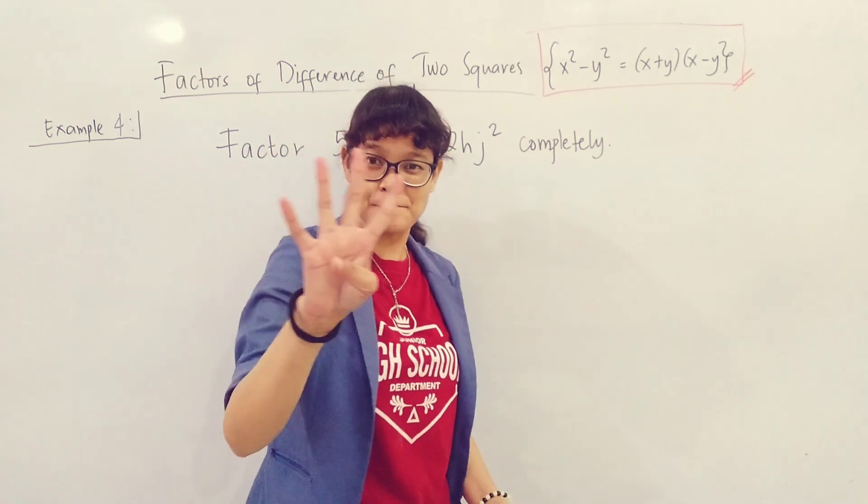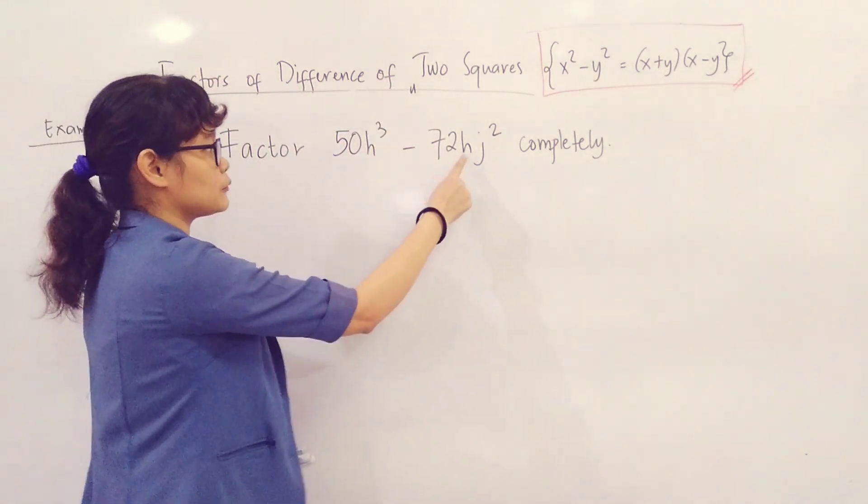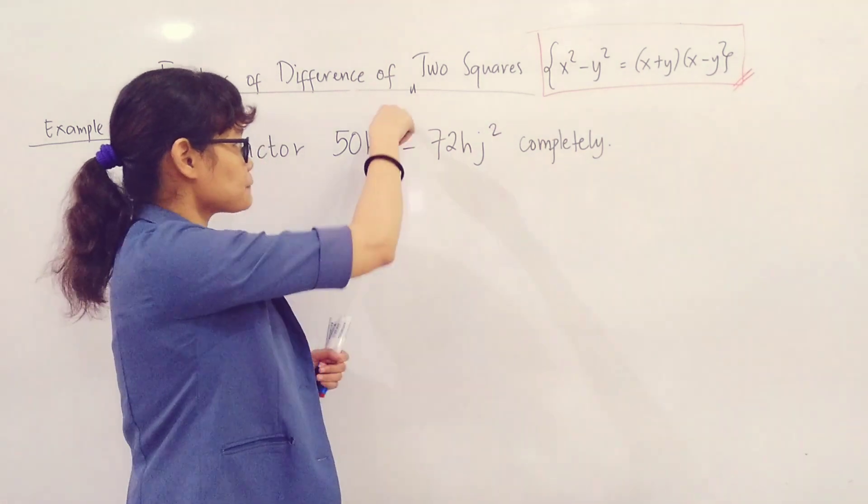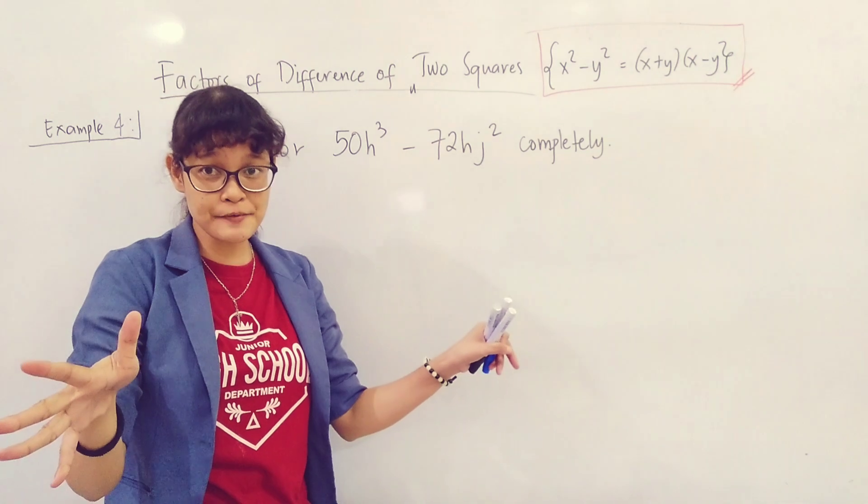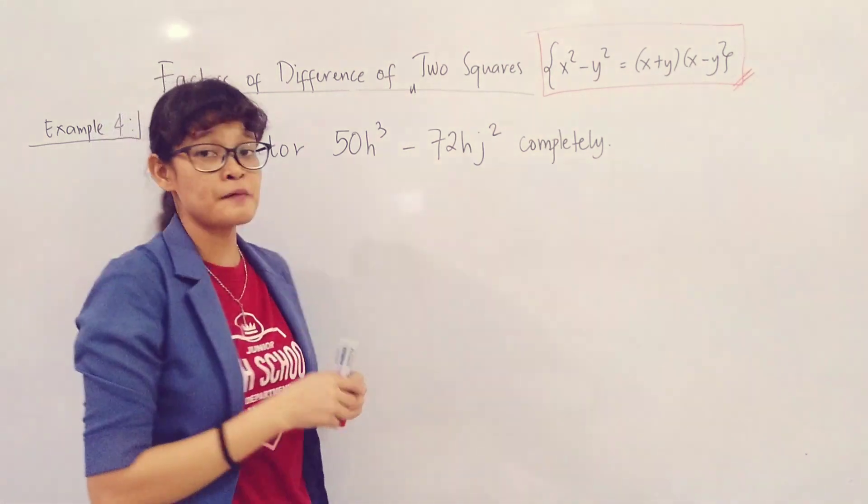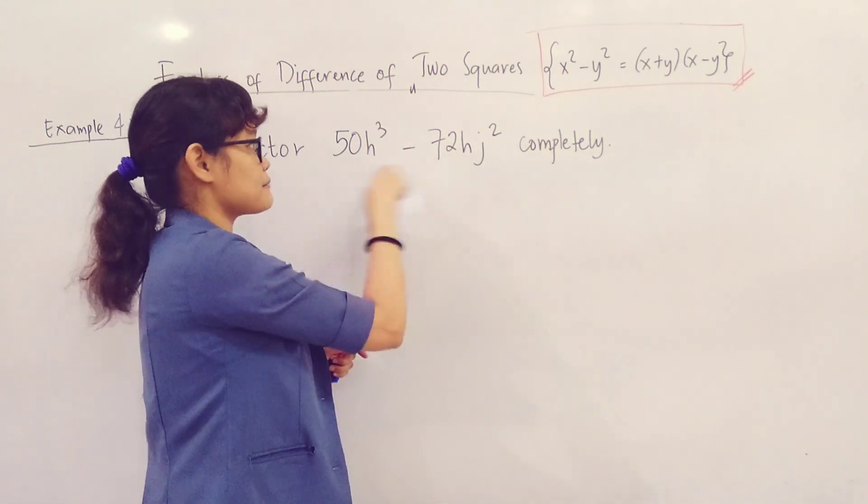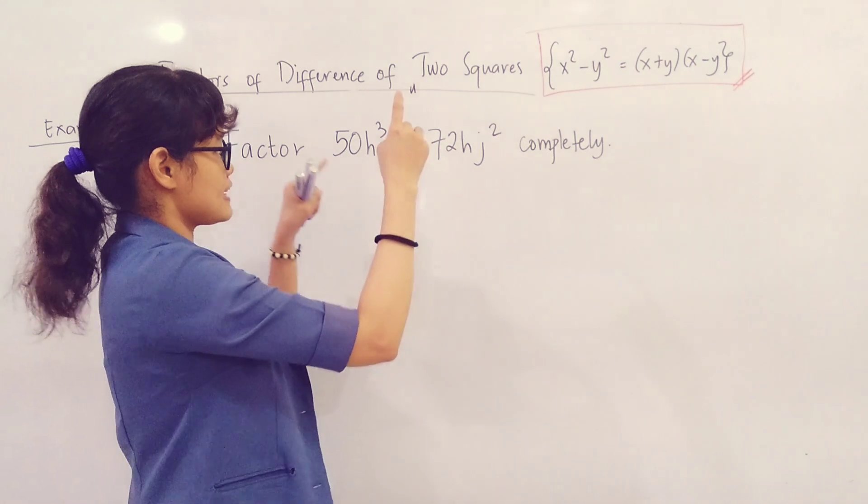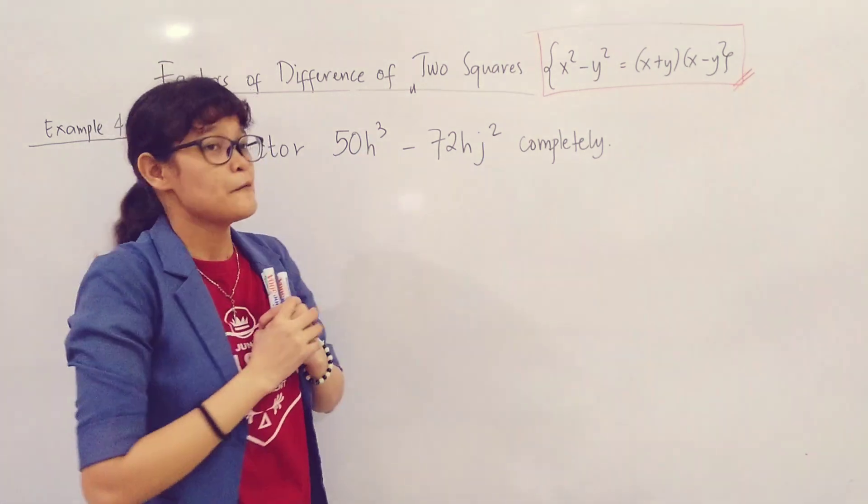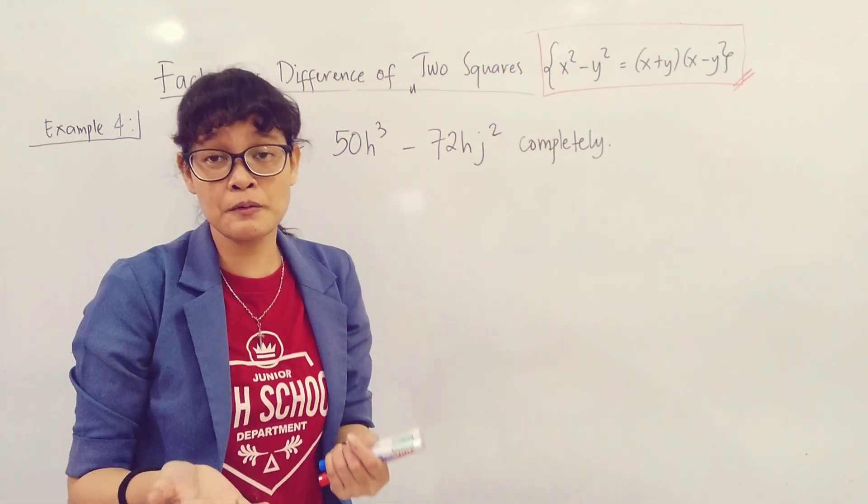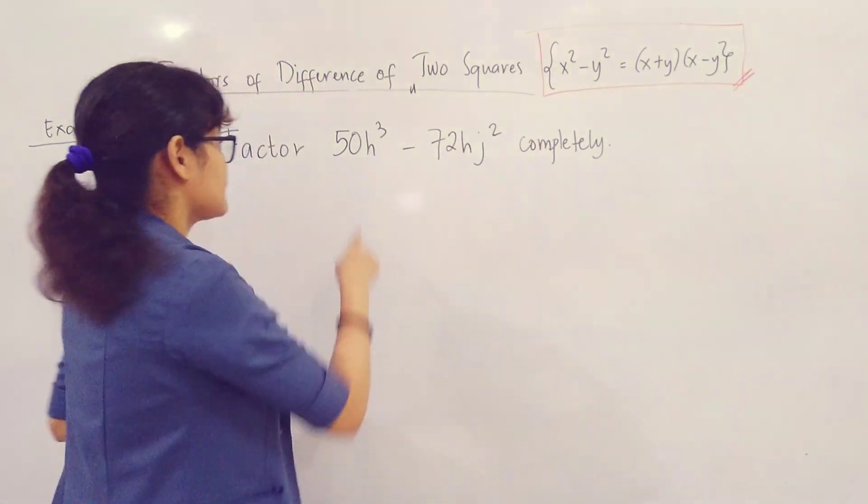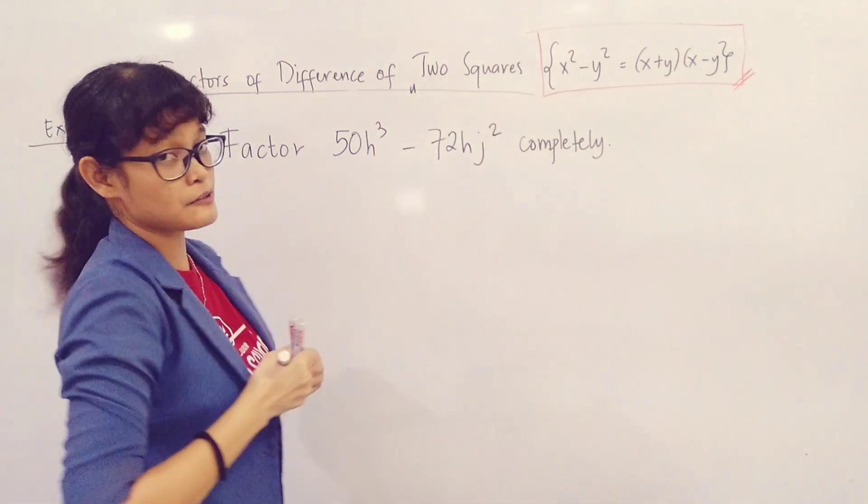Let's have example number 4. We have factor 50H cubed minus 72H squared completely. As you can notice, 50 and 72 are not perfect squares. H cubed and H are not perfect squares as well. However, this is where the concept of common monomial factoring comes in. Because if you are going to look closely, 50 and 72 have a GCF. H cubed and H have a common factor too. The first step in solving this kind of problem, or to factor this kind of polynomial, we have to get its greatest common monomial factor first. And then we're going to use that GCF to get the other factor.